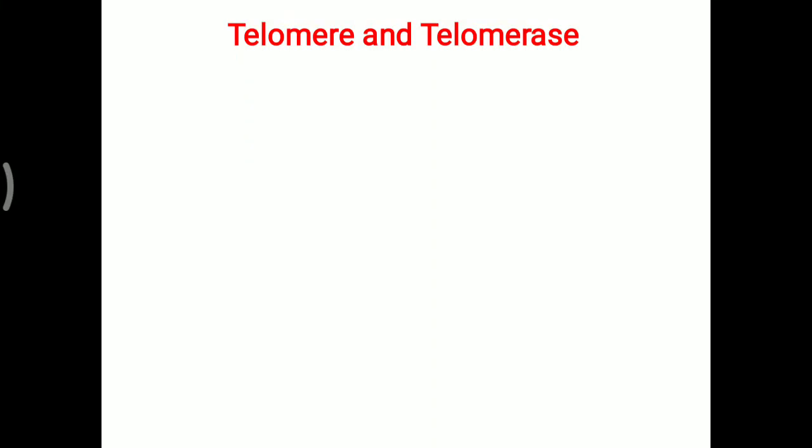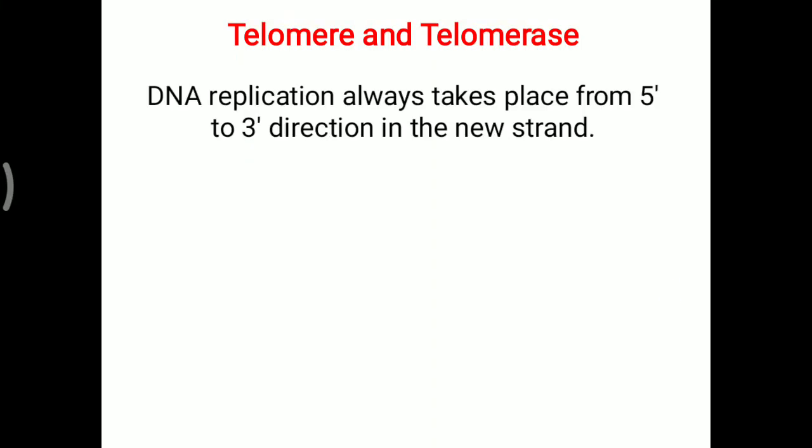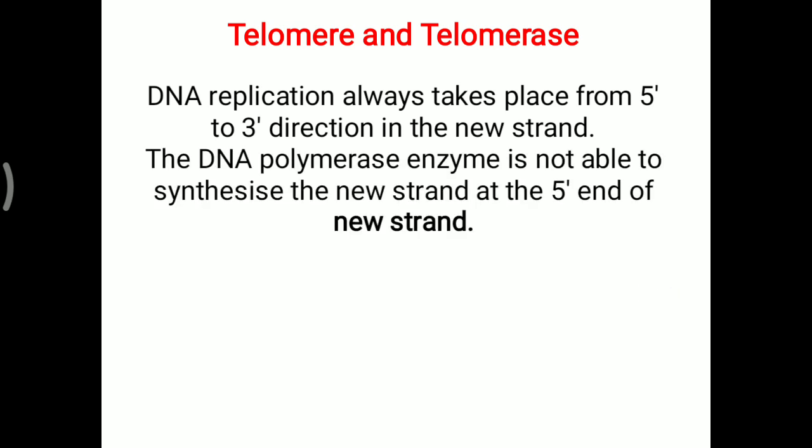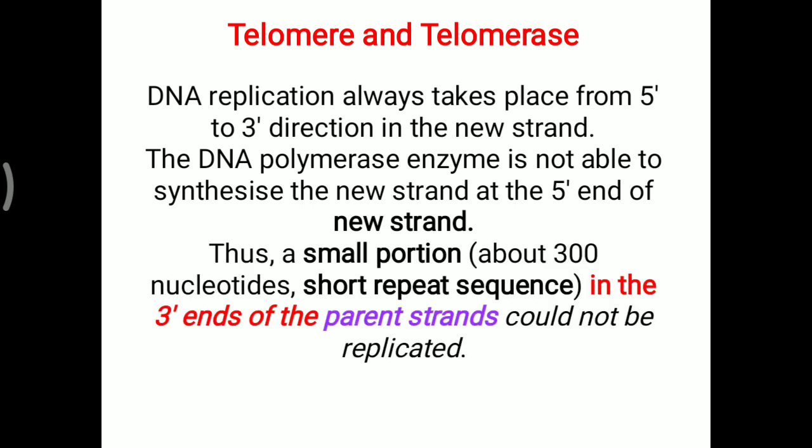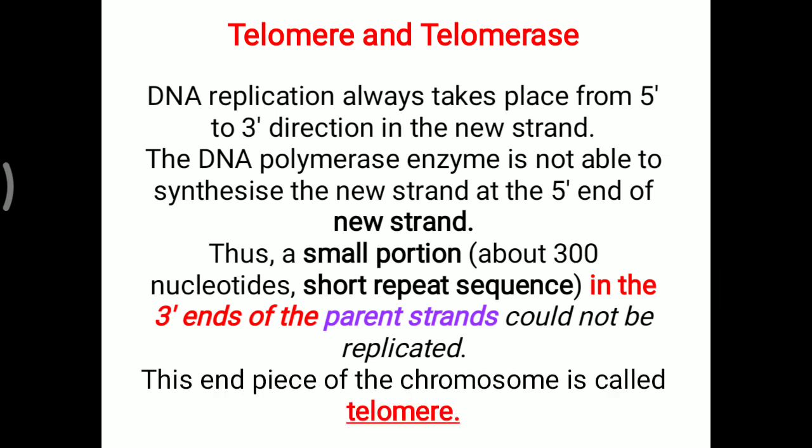Today's topic is about telomere and telomerase enzyme. DNA replication always takes place from 5' to 3' direction in the new strand. DNA polymerase enzyme is not able to synthesize a new strand at the 5' end of the new strand. Thus, a small portion of about 300 nucleotides — a short repeat sequence — at the 3' end of the parent strand could not be replicated. This end piece of the chromosome on the parent strand is called a telomere.